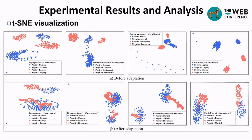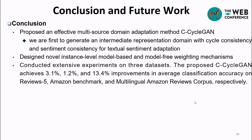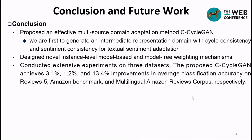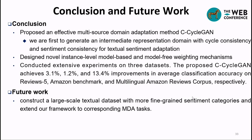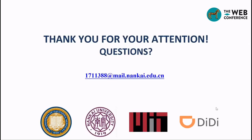Here are t-SNE visualizations of different adaptation stages. In conclusion, we proposed an effective multi-source domain adaptation method, C-CycleGAN, with novel instance-level model-based and model-free weighting mechanisms, and conducted extensive experiments on three datasets. For future work, we will construct a large-scale textual dataset with more fine-grained sentiment categories, extend our framework to corresponding MDA tasks, and explore multimodal DA by jointly modeling multiple sources such as image and text. Thank you.